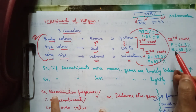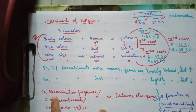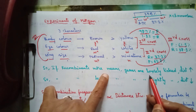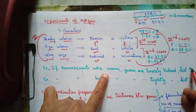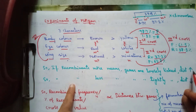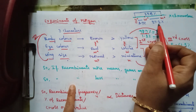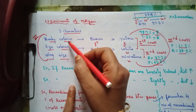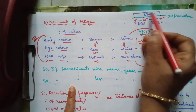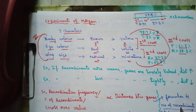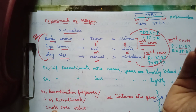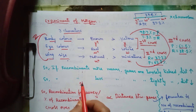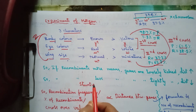In the first cross, recombinants are only 1.3 percent. In the second cross, recombinants are 37.2 percent. In the third cross, recombinants are 38.5 percent - the highest of all three. More recombinants means genes on the same chromosome are loosely linked, meaning the distance between those genes is greater. Based on these results, Morgan's student Sturtevant for the first time gave chromosomal mapping.